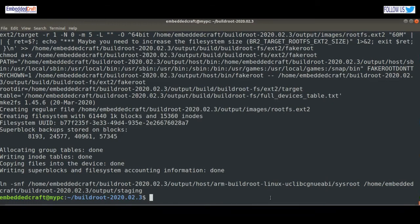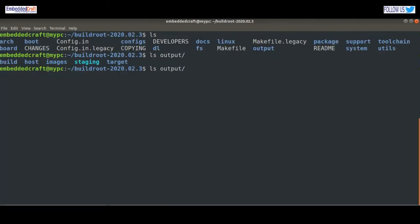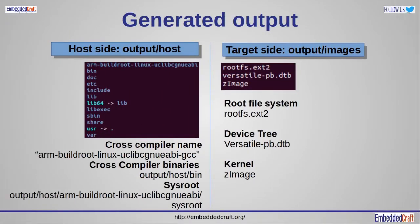Now the build is complete. You can find all generated files in the output directory. Kernel and root file system are available in output/images. Host-side files are available in output/host. You will find the cross-compiler which is arm-buildroot-linux-uclibcgnueabi-gcc. Cross-compiler binaries are available in output/host/bin. The sysroot is also generated, available in host/arm-buildroot-linux-uclibcgnueabi/sysroot. Sysroot is the directory having headers and libraries for the target, and is used in cross-compilation.